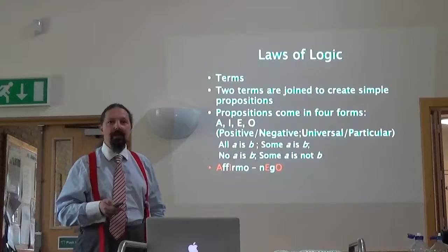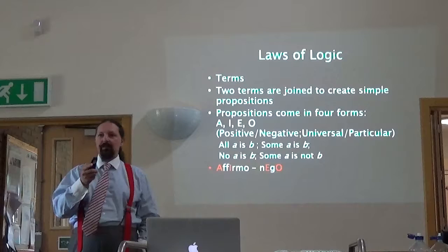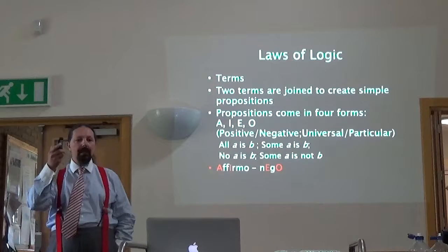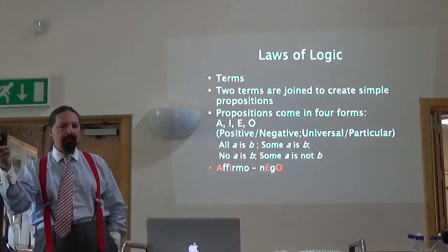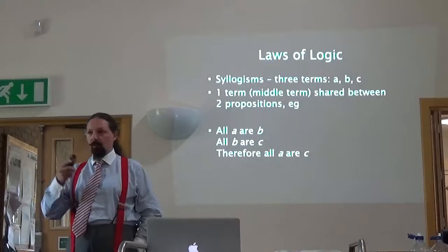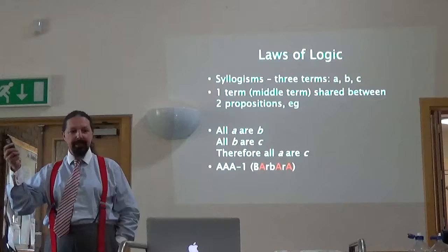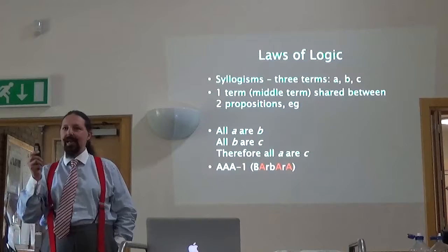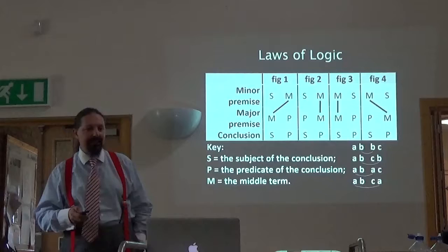The A, I, E, O letters that we use as shorthand come from two Latin words. The first vowels in the Latin words relate to the universal propositions. A is the universal affirmative — all A is B. E is the universal negative — no A is B. I becomes some A is B. O becomes some A is not B. With three terms you can create a syllogism, with one term — the middle term — shared between two propositions. The most common one is: all A are B, all B is C, therefore all A is C — called Barbara syllogism because you have three A-type propositions.